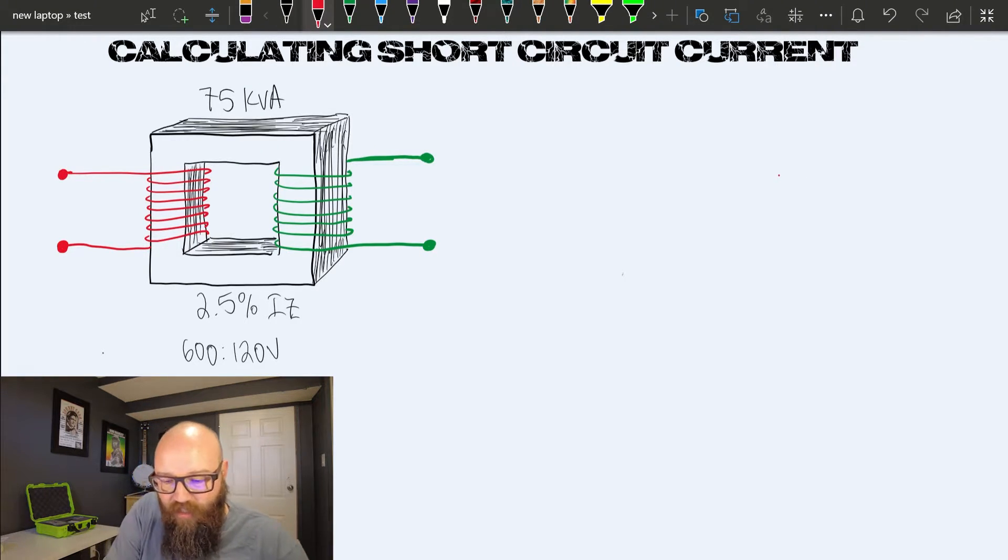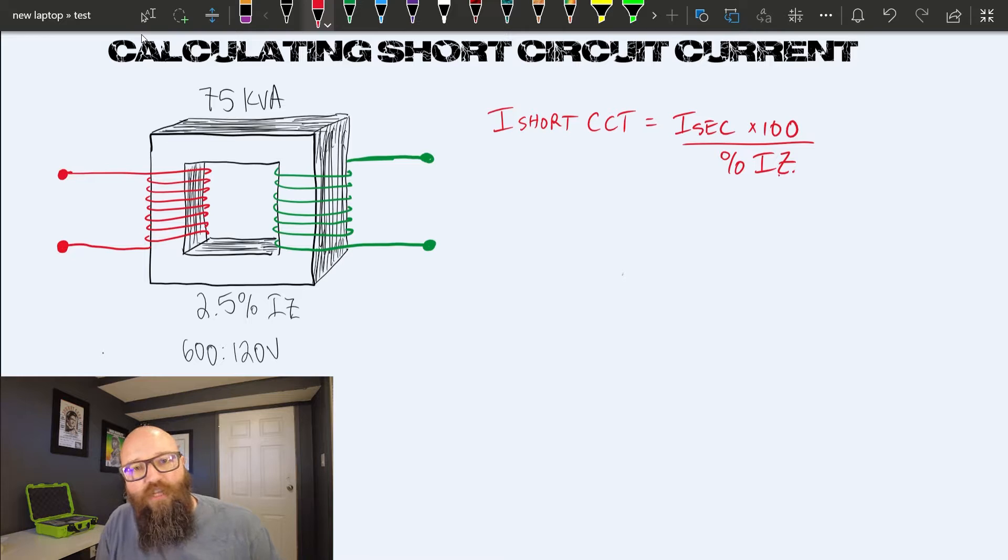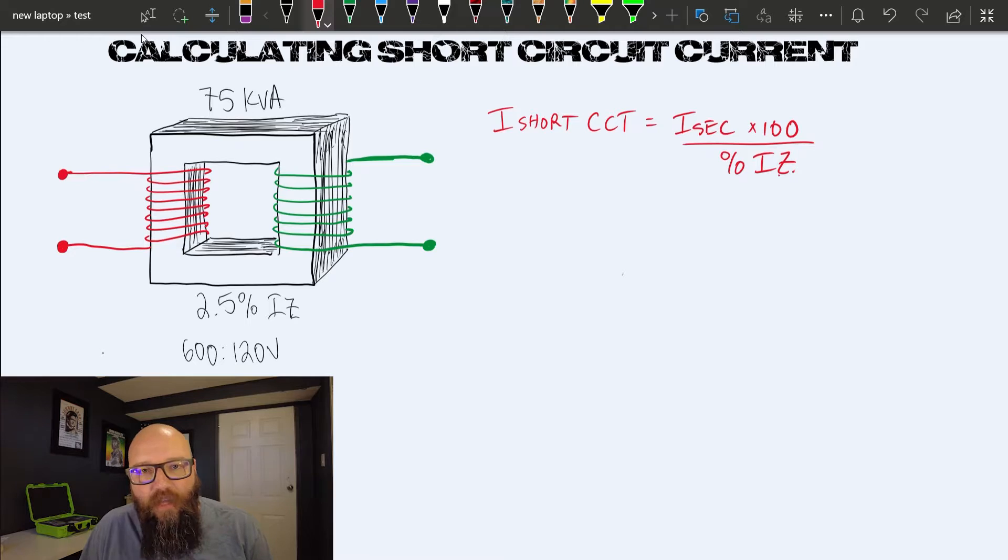Before we get rolling, let's write out our formula. I short circuit equals current on the secondary times 100 divided by percent IZ. There are variations of this formula. I like to use I secondary times 100 because it automatically converts that percent impedance to its decimal form without having to convert it in the formula. That way I can just grab the actual raw percentage—I can use 2.5 in this example. That's what that times 100 does.